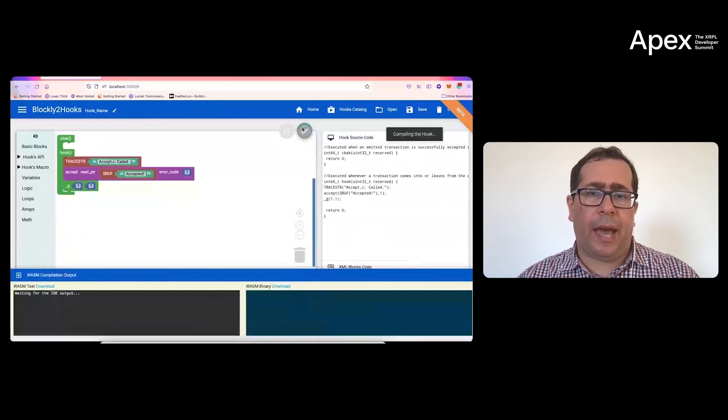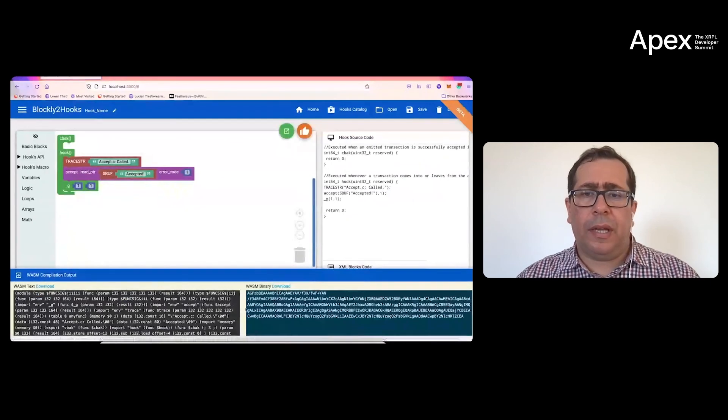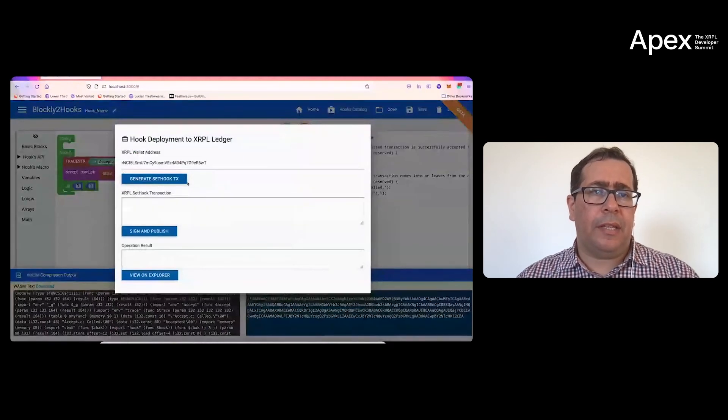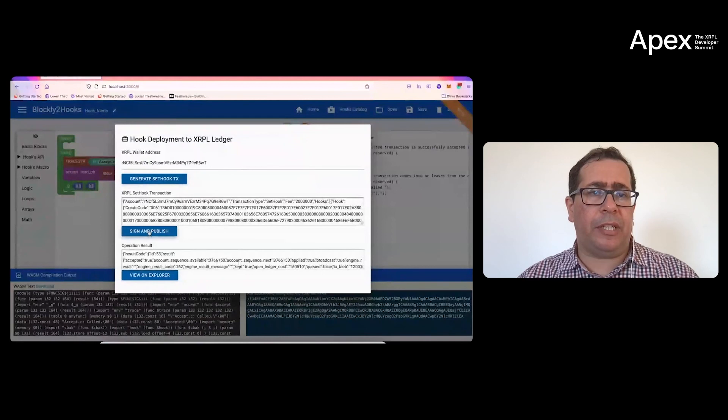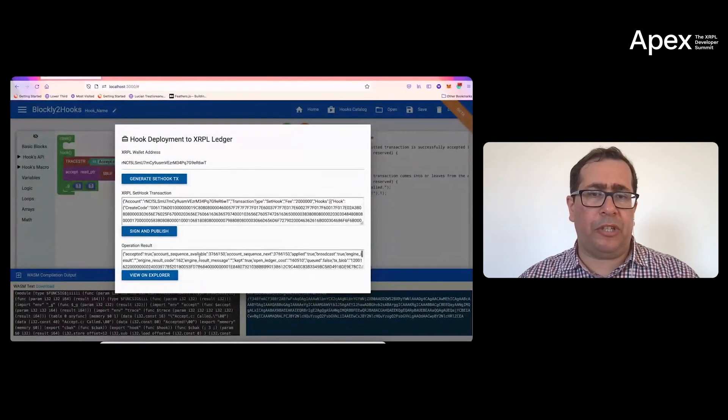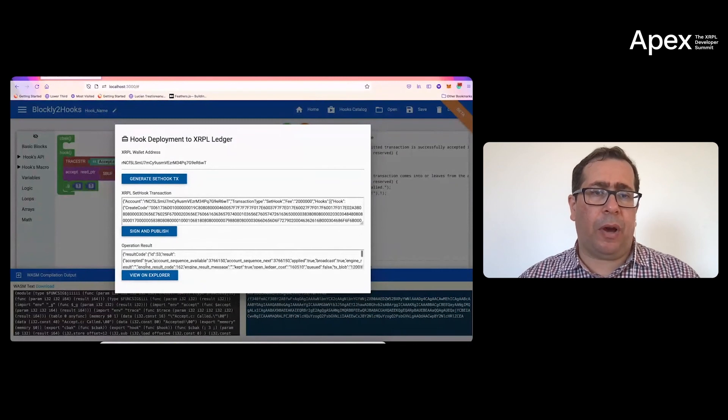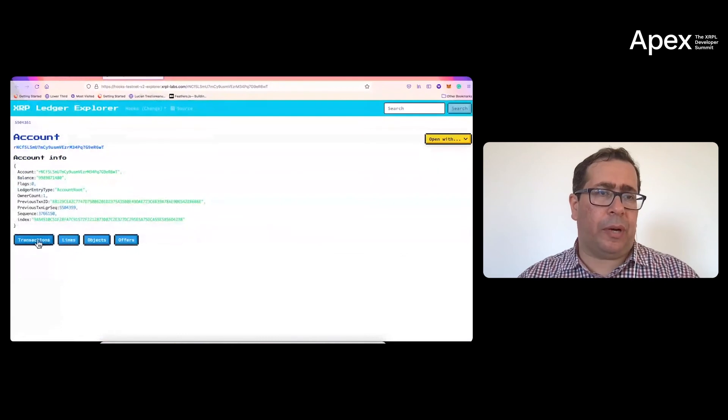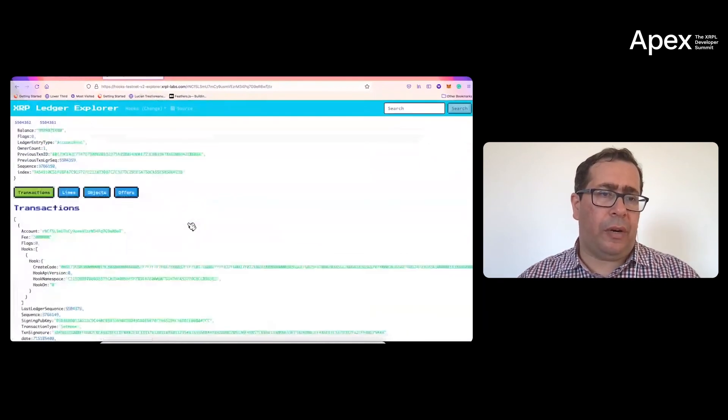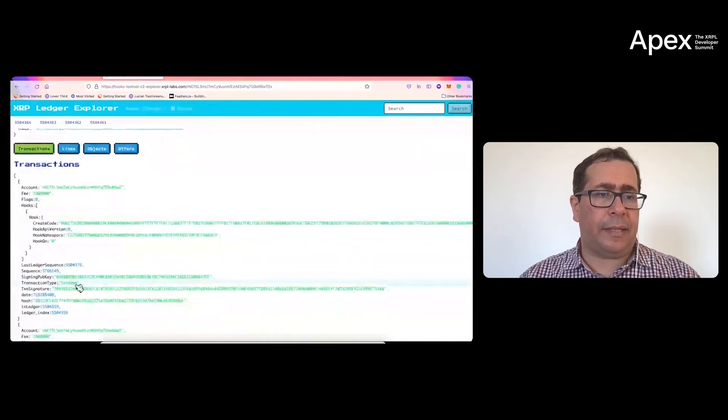Now we have the WASM binary of the code, and we need to deploy it. We also integrate the deployment to the testnet. This is the wallet address where the Hook will be set. We generate the set Hook transaction, then sign and publish the Hook to the ledger. Here we have it successfully deployed. If required, we can view it on the Explorer of the ledger. Here we have the latest transaction that is set to Hook. That's it from our side. Thank you for being here.